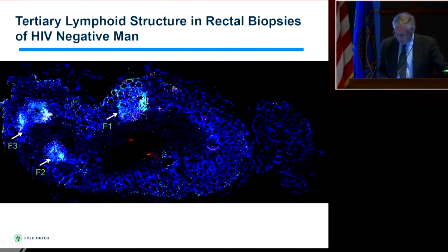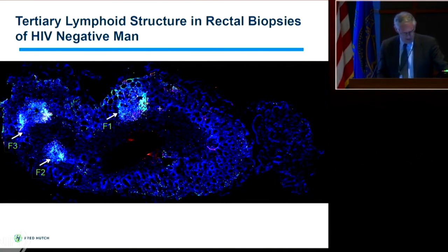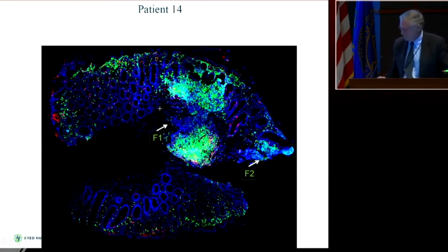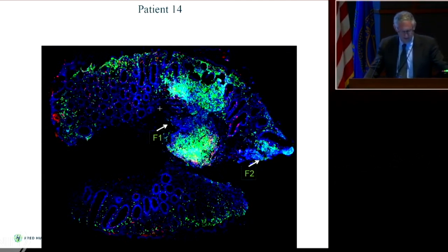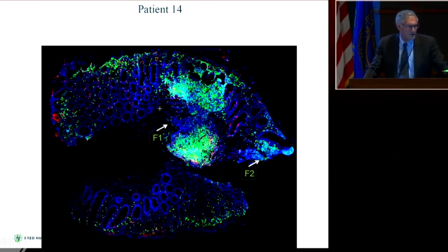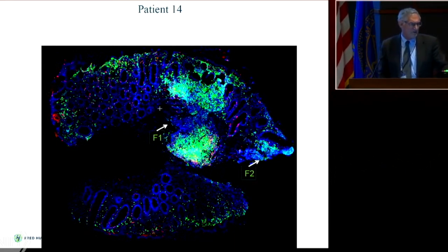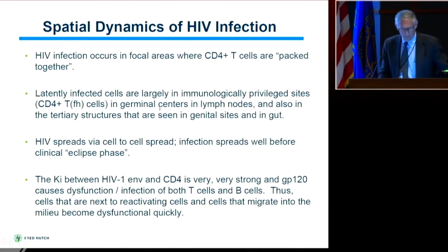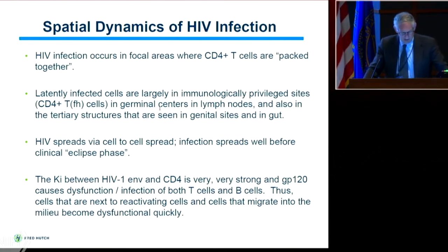It's not just in the lymph nodes, it's also in the tissue. This slide is actually a rectal biopsy from an HIV-negative person, but you can see these lymphoid follicles packed with CD4 T-cells — an incredible mass of CD4 T-cells not in the germinal center but in the interstitial acinar tissues. As we biopsy the genital tract of both women and men, we see these tertiary lymphoid structures, also described in the non-human primate. So we have not just a lymphoid problem but a tissue distribution problem throughout the genital tract. HIV infection occurs in focal areas where CD4 T-cells are packed together and latently infected cells are in immunologically privileged sites.